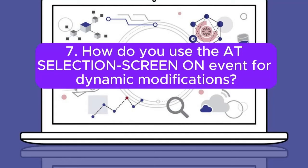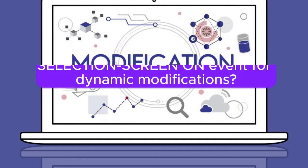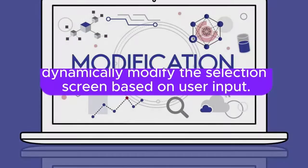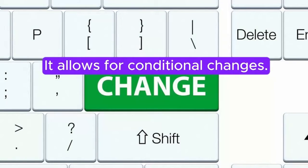Question 7: How do you use the AT SELECTION-SCREEN ON event for dynamic modifications? Answer: The AT SELECTION-SCREEN ON event is used to dynamically modify the selection screen based on user input. It allows for conditional changes.